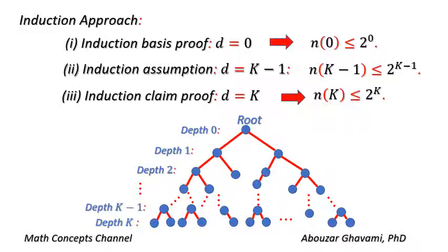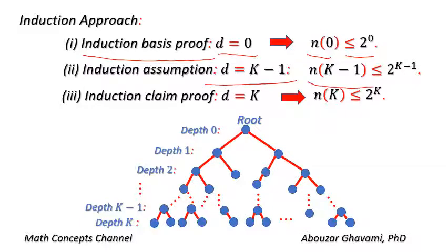In our induction approach, we first prove the induction basis: for depth zero, N of zero is less than or equal to two to the power of zero. Then we assume that for depth K minus one, N of K minus one is less than or equal to two to the power of K minus one. Based on the nature of the problem and the induction assumption, we prove the induction claim: for depth K, N of K is less than or equal to two to the power of K.